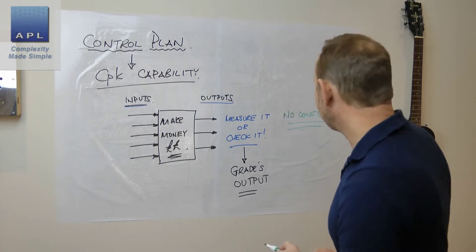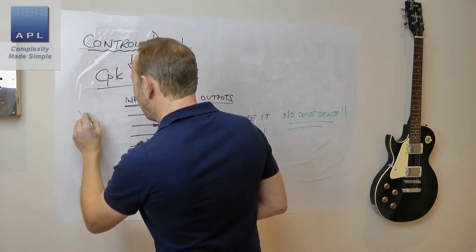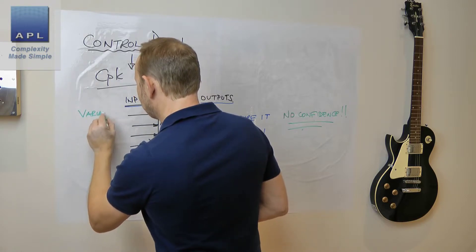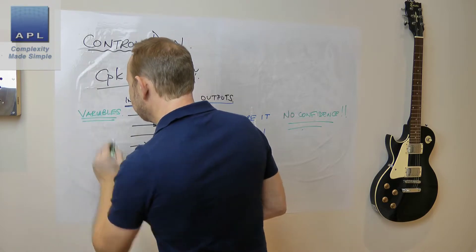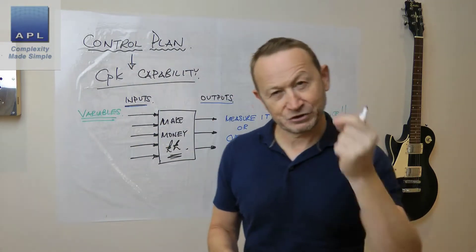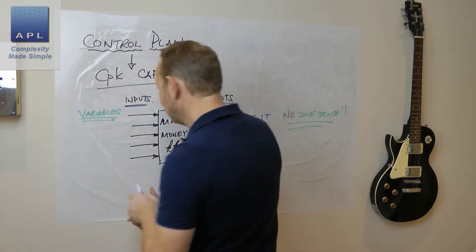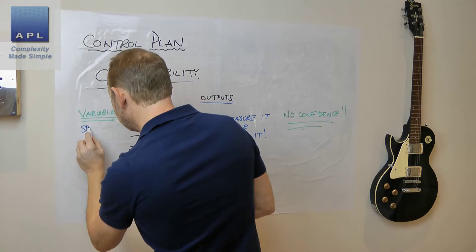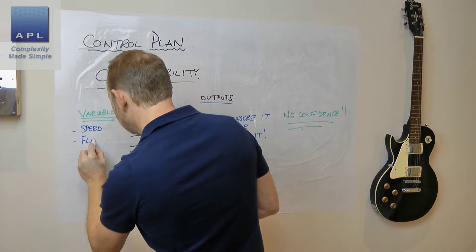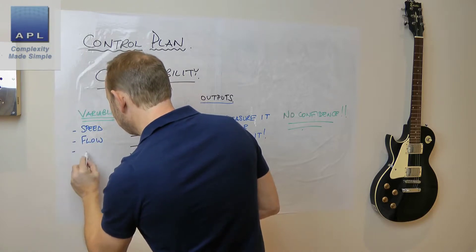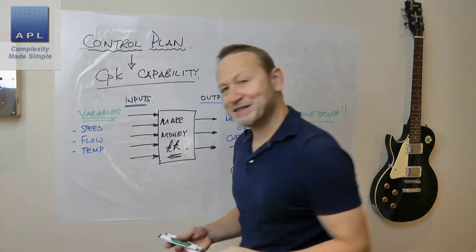A true control plan works on the variables — the inputs. It identifies individual variables, single things. So it could be settings on the machine, the speed of the machine, the flow setting of a liquid through the machine, it could be a temperature.